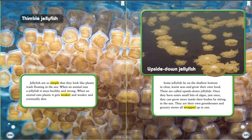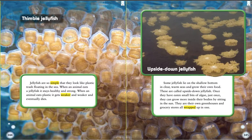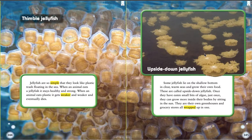Jellyfish are so simple that they look like plastic trash floating in the sea. When an animal eats a jellyfish, it stays healthy and strong. When an animal eats plastic, it gets weaker and weaker and eventually dies. These are thimble jellyfish. Some jellyfish lie on the shallow bottom in clear warm seas and grow their own food — these are called upside-down jellyfish. Once they have eaten small bits of algae, just once, they can grow more inside their bodies by sitting in the sun. They are their own greenhouses and grocery stores all wrapped up in one. Here are some upside-down jellyfish.